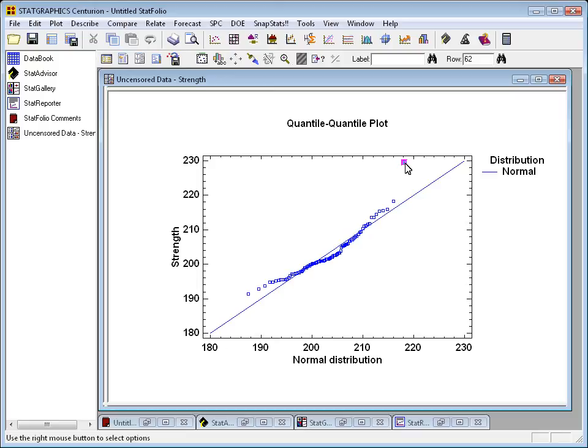In other words, we've observed a value much larger than we would expect, again, from a normal distribution with the mean and standard deviation that correspond to my data.